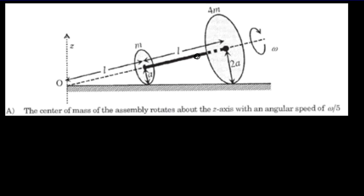The first thing we always want to do when problem-solving is take stock of the information we're given. We want to sort out that information and get our minds clear. A few things you should notice: all the answers are expressed in terms of A and Omega, so everything has to end up in terms of A and Omega. We're also given the expression L equals the square root of 24 times A, which is going to help us with that.